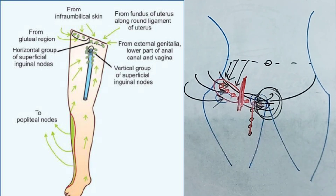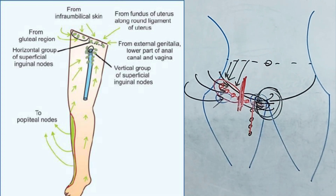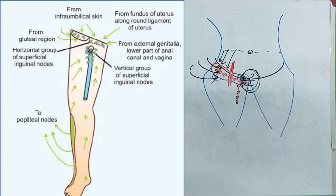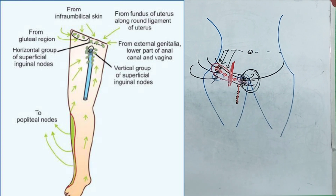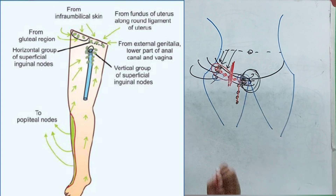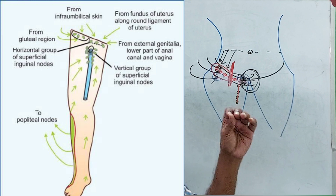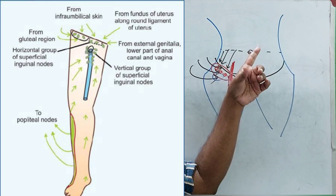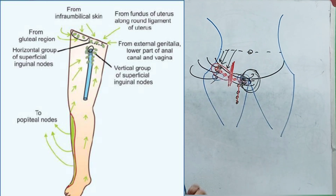The medial group also drains the lower part of the anal canal below the pectinate line, and some part of the perineum. However, the glans penis or glans clitoris are not drained by these nodes — rather they are drained by the deep inguinal lymph nodes. Another important drainage area of this medial group is the angle of the uterus in females: through the round ligament of the uterus, lymphatics from the angle of the uterus reach the medial group of lymph nodes.